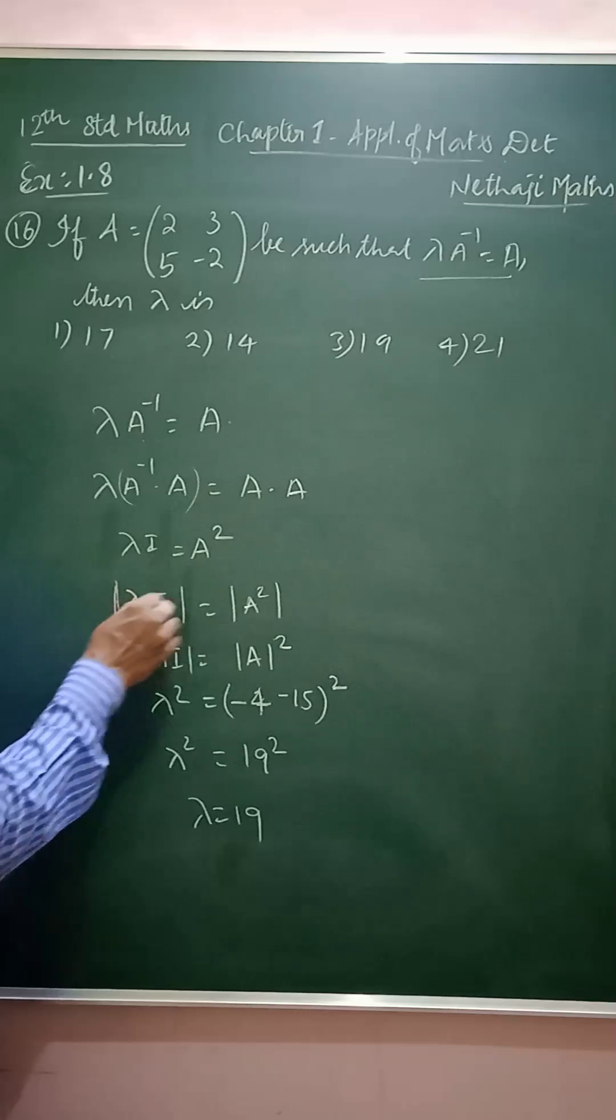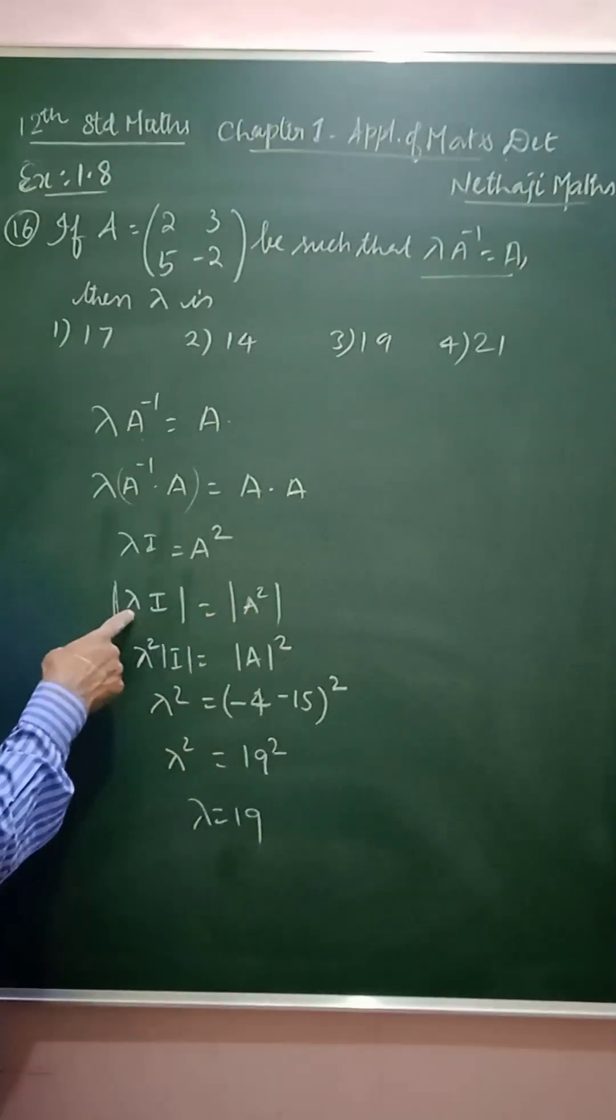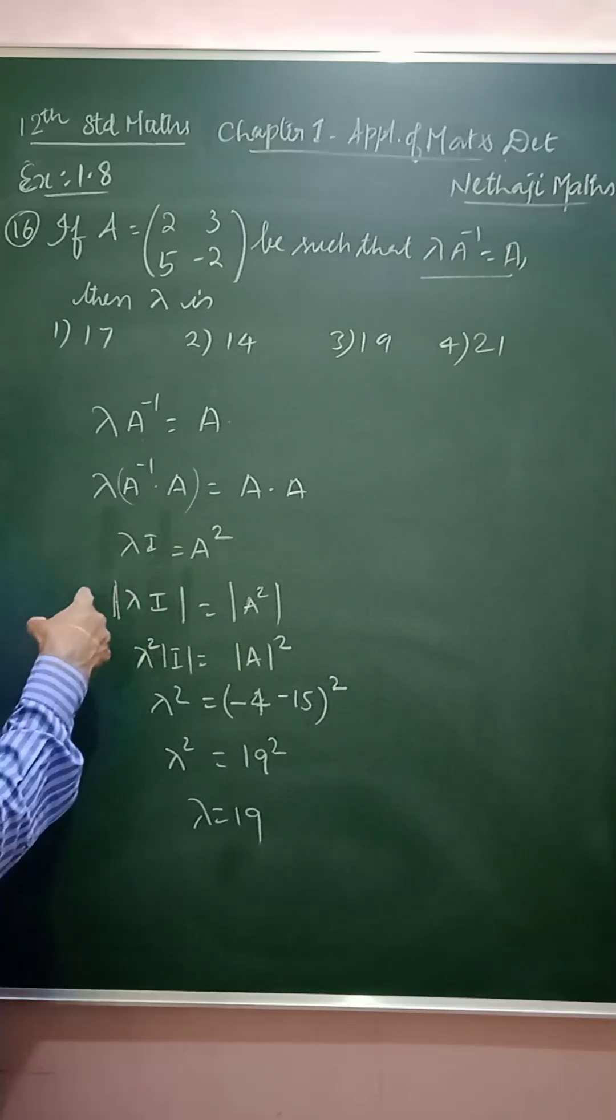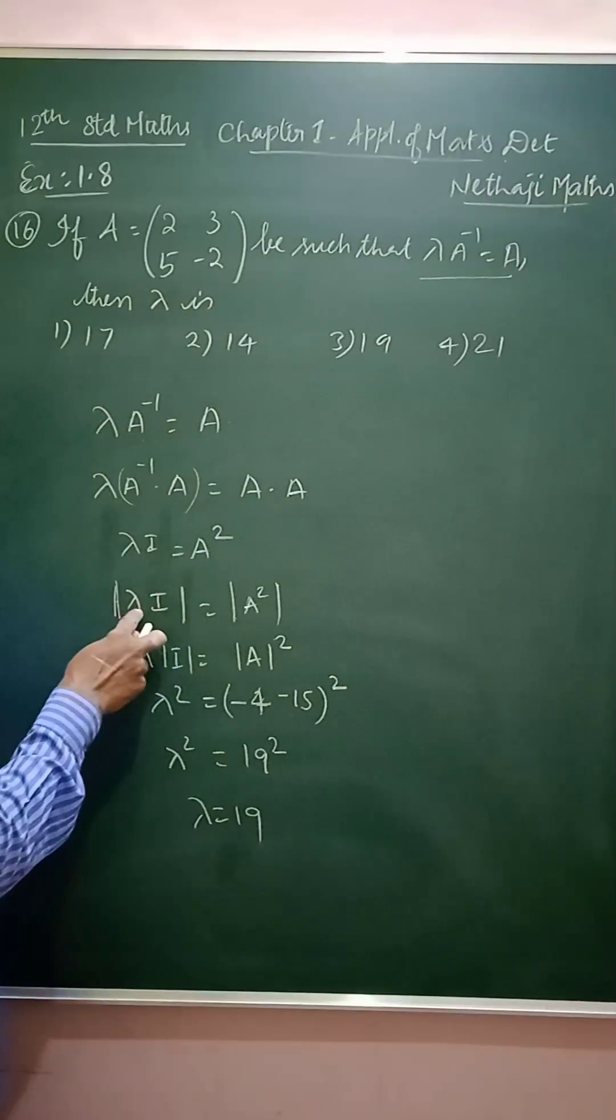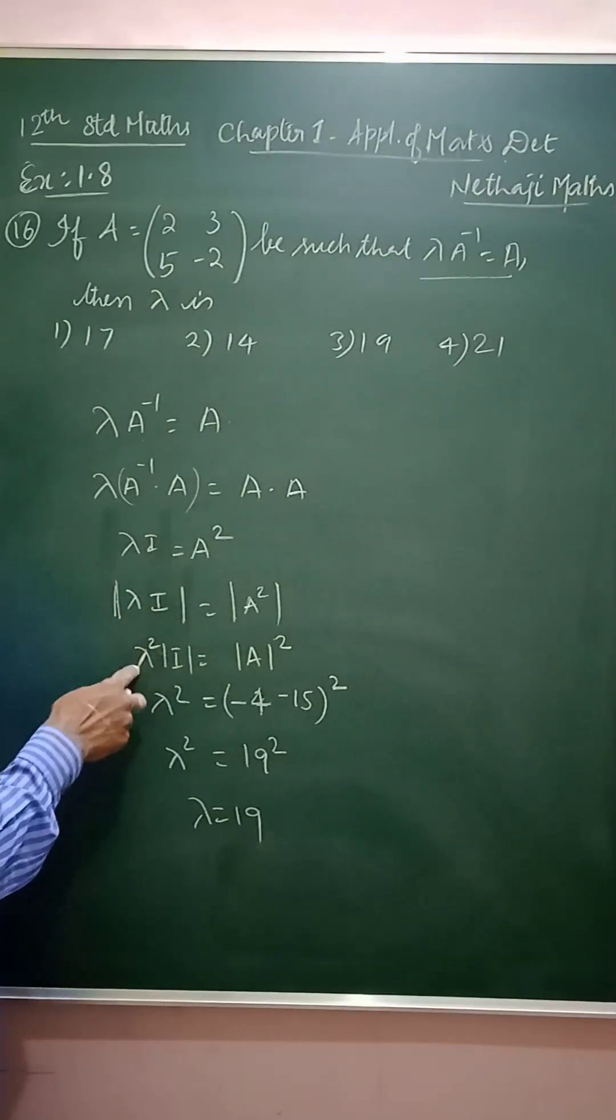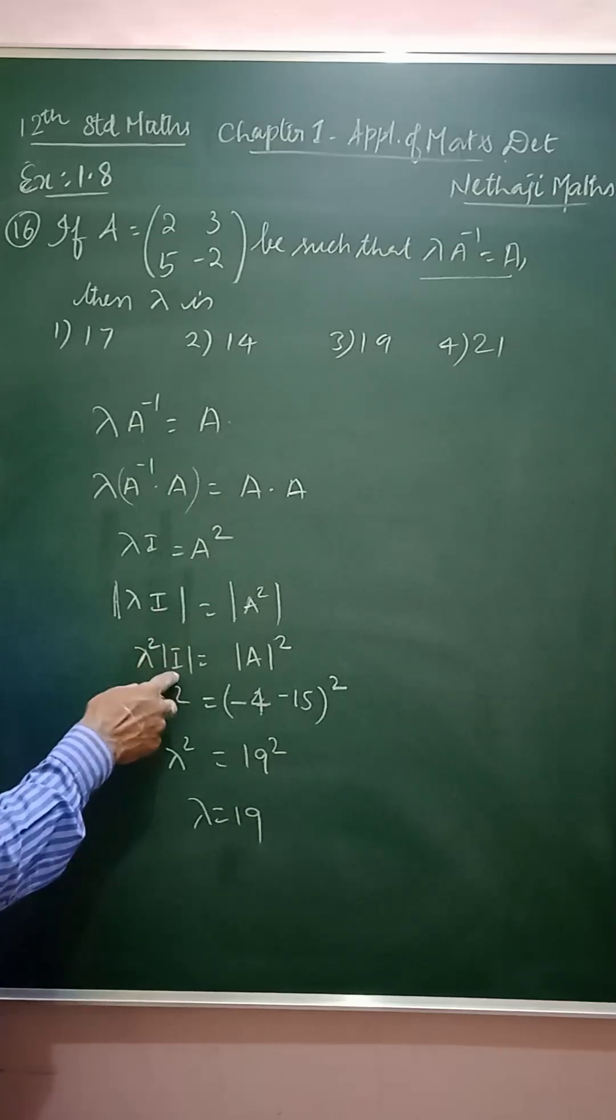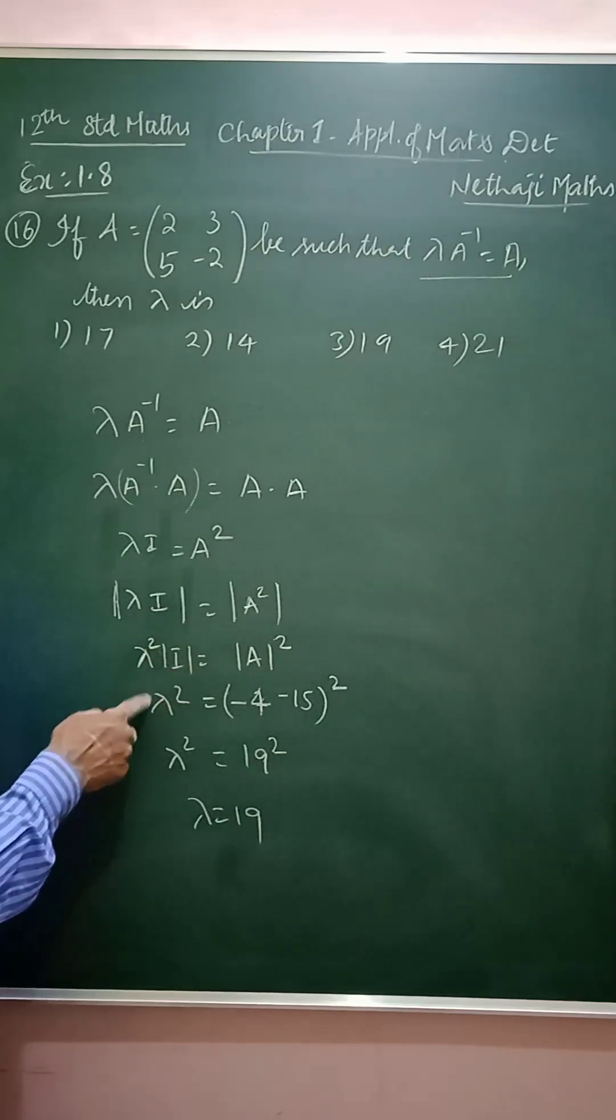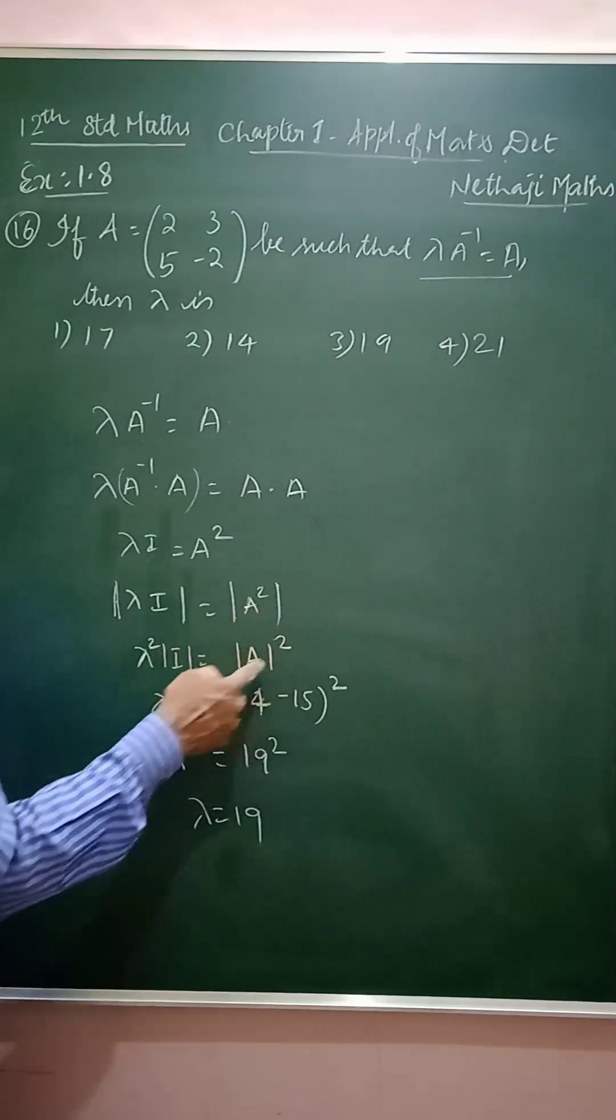Sorry, determinant on both sides. So, in the side, this side will be determinant of determinant of scalar multiples into the matrix. Now, this depends upon the order, this is lambda square. So, lambda square into determinant of i. The determinant of i is 1. So, lambda square is equal to determinant of A whole square.